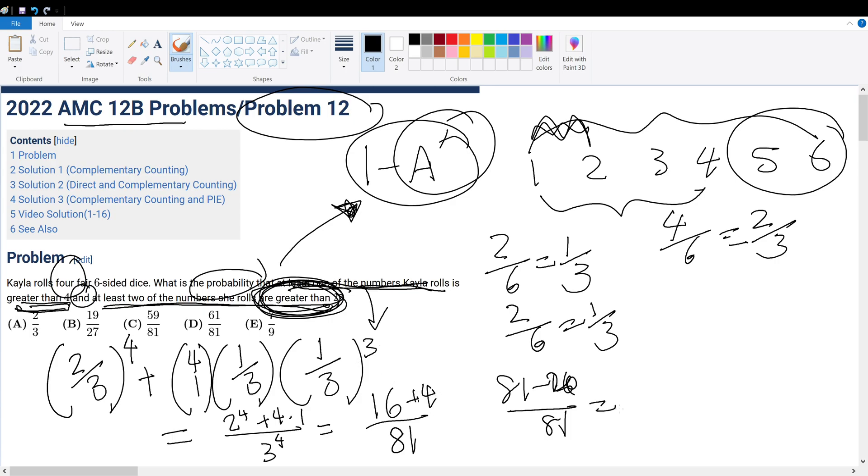So, this is 61 over 81, answer choice D.